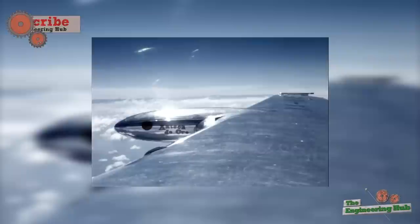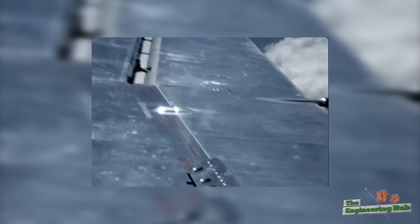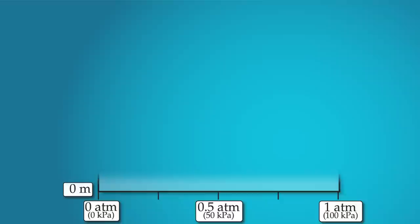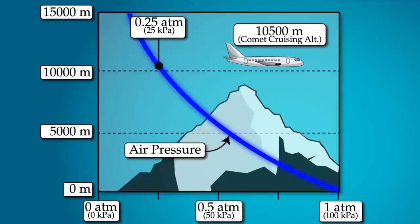The high operating altitude meant thin air, hence less drag and higher efficiency, though this came at a price. The air was too thin for breathing, so the cabin had to be pressurized. The air pressure at an altitude of 10km is about 25% of the pressure at sea level.